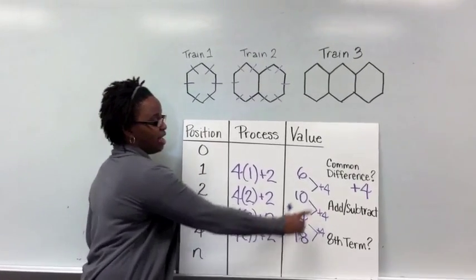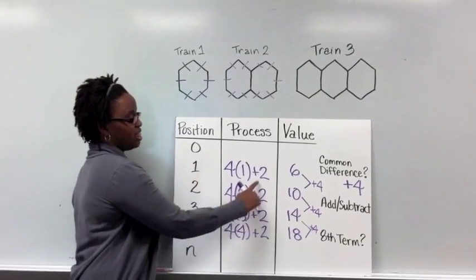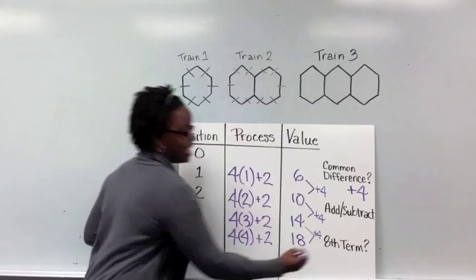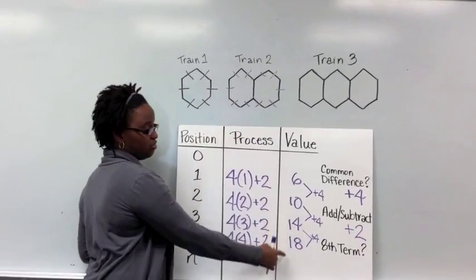So every single time, I've taken my common difference times the position. And then I found that for every single one, I had to add 2 more on to get to the desired value that's here.